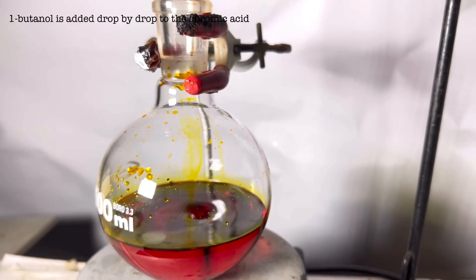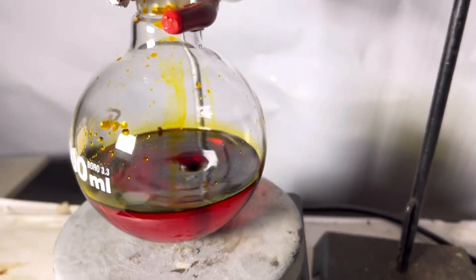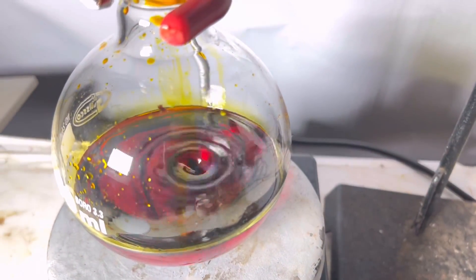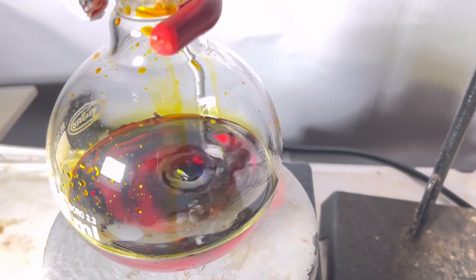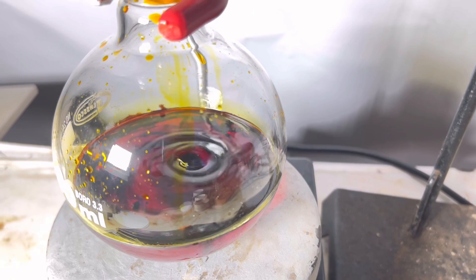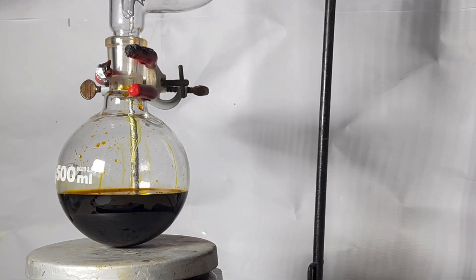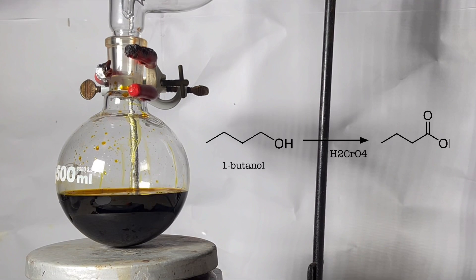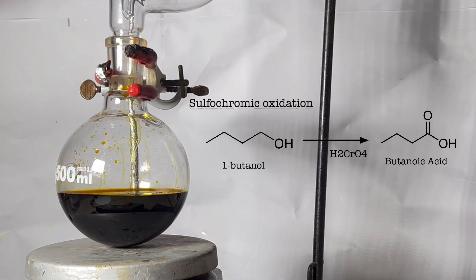Immediately upon contact with the chromic acid the solution starts to darken as the oxidation has begun. Here, one butanol is oxidized by the chromic acid to butanoic acid or butyric acid thereby the hexavalent chromium is reduced to its trivalent state, indicated by the change in color from orange to dark green. This method of oxidation is also known as sulfur chromic oxidation method.